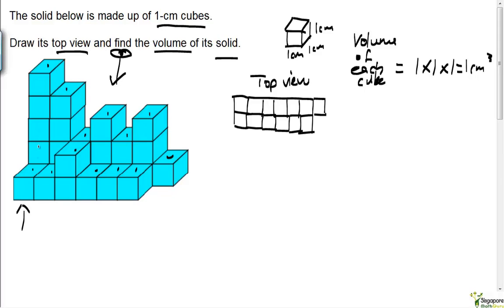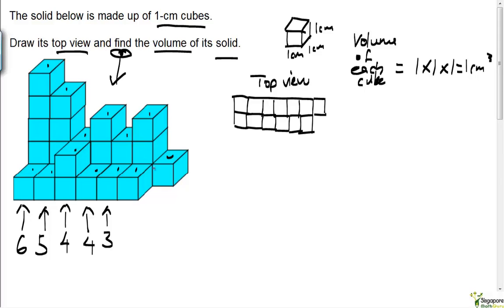You have one, two, three, four, five, and one cube hidden, so you've got six cubes along this plane. Then five cubes here — one, two, three, four, and a fifth hidden. Then four here — one, two, three, and a fourth hidden. And again four here — one, two, three, and a fourth hidden.